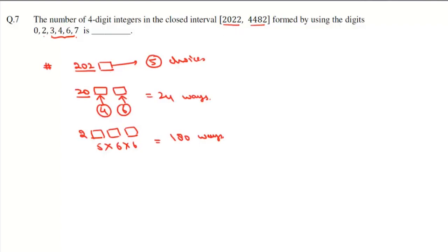Now with 3 we do not have any problem. Any number starting with 3 will always lie in this range, so the first position is fixed. For the second position we have six choices, for the third also we have six choices, and for the fourth also we have six choices, so there will be simply 216 ways. Now we'll talk about numbers starting with 4.